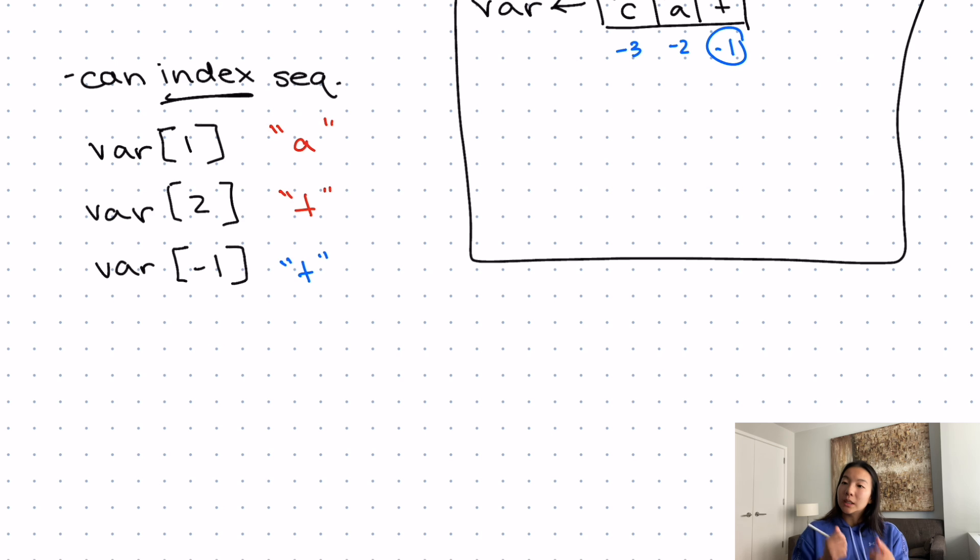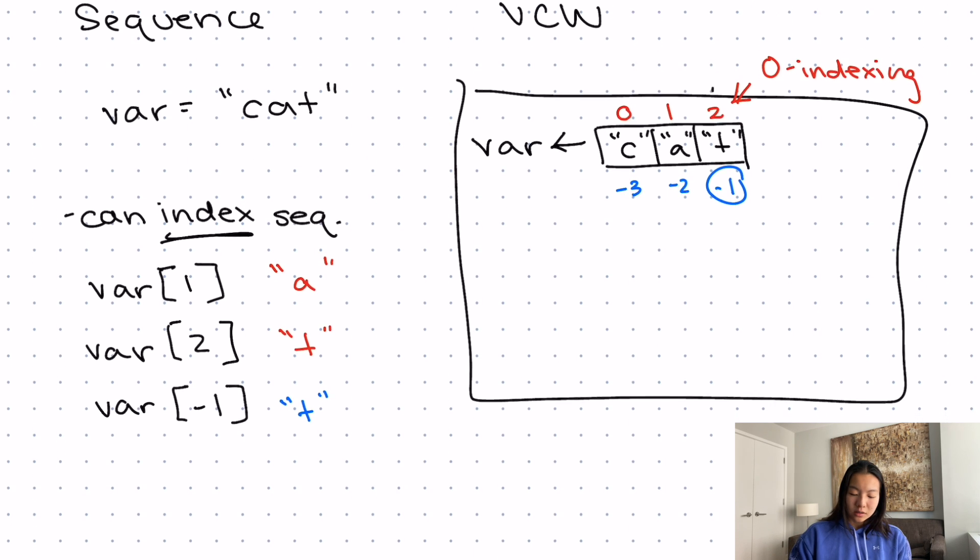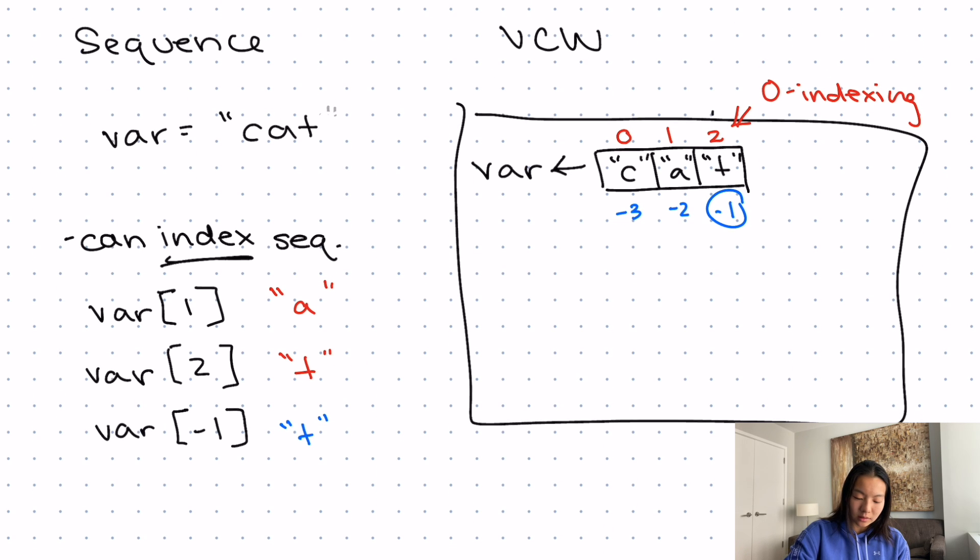We can basically extract certain pieces of a sequence. The cool thing about indices is that it doesn't just have to be a single index, you can actually take a slice of indices. So let me change this to a slightly longer string. Let's call this cater. The next thing here is E and then R. And that means that we would change our indices. The indices here would be negative one, negative two, negative three, negative four, negative five, or zero, one, two, three, four.